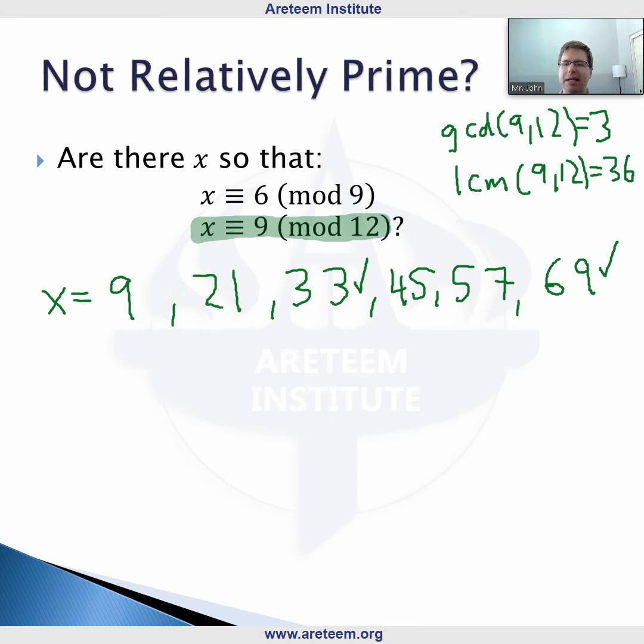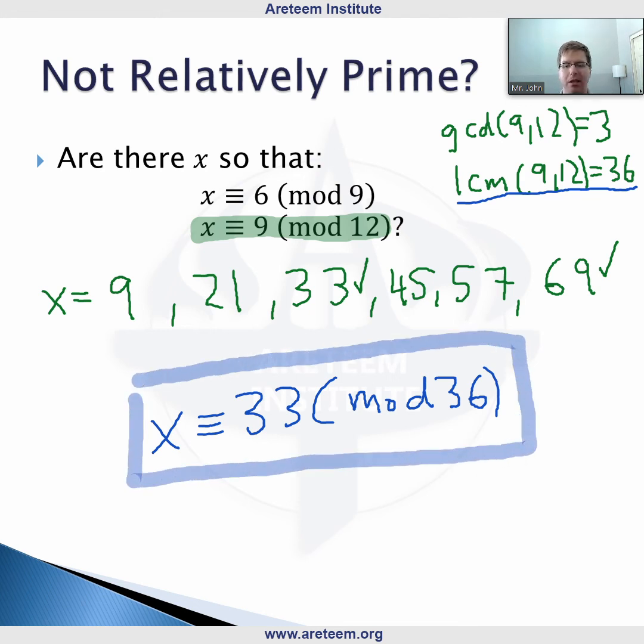I wanted to look at this example to say our general answer is x ≡ 33 (mod 36). It's not the product, it's mod 36, which is their LCM in this case. So here is where things are a little bit different. The Chinese remainder theorem did not apply. We were not guaranteed a solution, but it still worked. That, however, is not always the case.